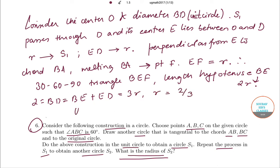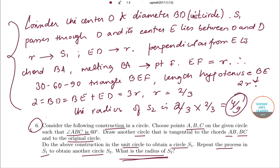So by similarity, the radius of S2 is 2/3 times 2/3, which is nothing but 4/9. So 4/9 will be the answer of the last part, and given this structure your job is to frame the diagram.